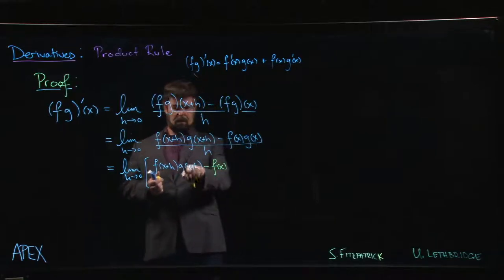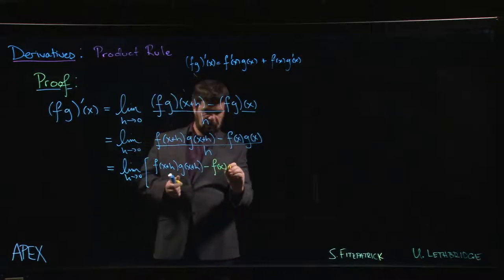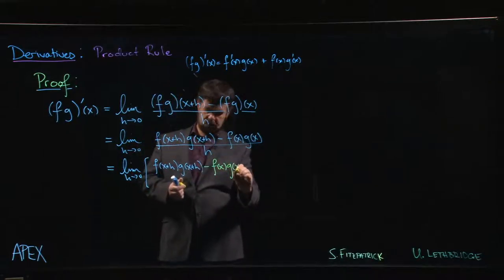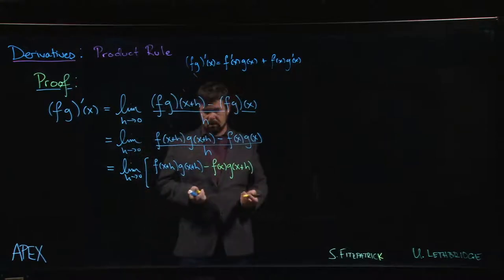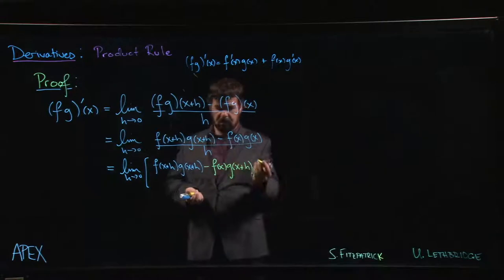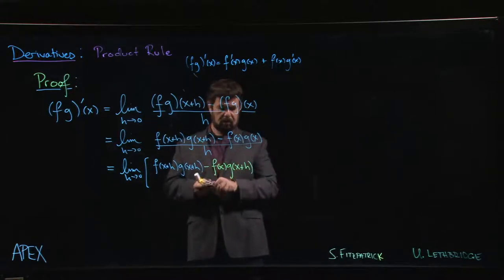I want f of x plus h minus f of x, so I say okay well I want minus f of x, but I need to be able to get rid of this g of x plus h. But of course you can't just add a term, if you do that you change things.